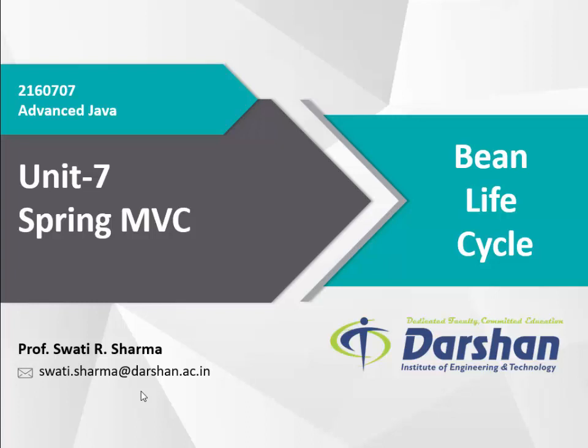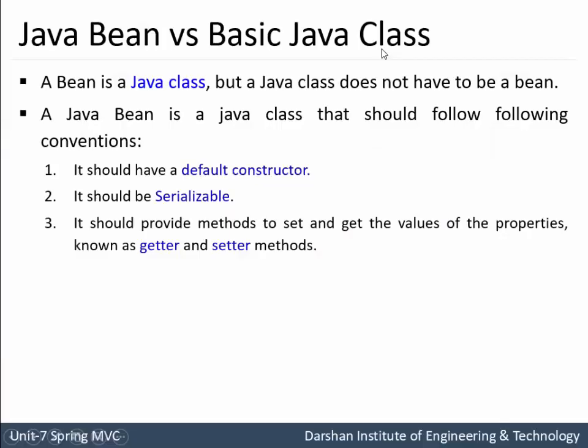Hello students, today I am going to take a lecture on Advanced Java Unit 7 - Spring MVC, and in this video I am going to explain bean life cycle. Starting with an introduction of bean and differentiating Java bean versus basic Java class. We have studied Java and as you all know, a bean is a Java class itself but it differentiates some of its properties from a basic Java class.